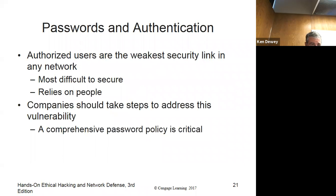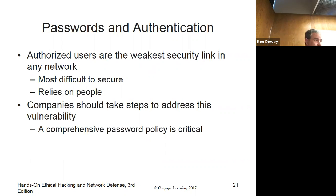Passwords — authorized users are the weakest security link and most difficult to secure. It relies on people, and we all hate passwords. A few years ago some company said passwords would be gone by 2020. Now there's YubiKey — it's a USB token, like an RSA token, a one-time token. Google, Facebook, and Apple are now supporting YubiKey. You can do three-factor now: something you are, something you have, something you know.